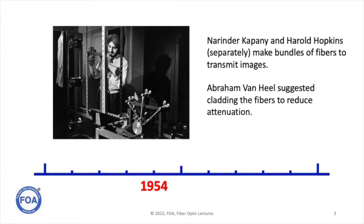Going all the way back to the 1950s, there were a couple of events that predate fiber optics for communications. Narendra Kapani and Harold Hopkins separately used fiber optics to transmit images, like today's endoscopes. Kapani went on to have a long career developing technology for fiber optics and communications. Abraham van Heel also suggested cladding fibers to reduce attenuation, which was very important in creating the low-attenuation fibers we have today.